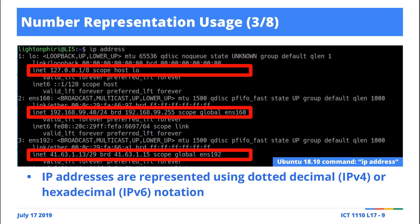Dotted decimal format is used for what they call IP version 4, which is the most widely used version. So all of the highlighted numbers here use dotted decimal format — IPv4. You have groups of decimal numbers separated by a dot. Using this particular unique identifier for my computer, I can easily communicate with another computer on the internet.